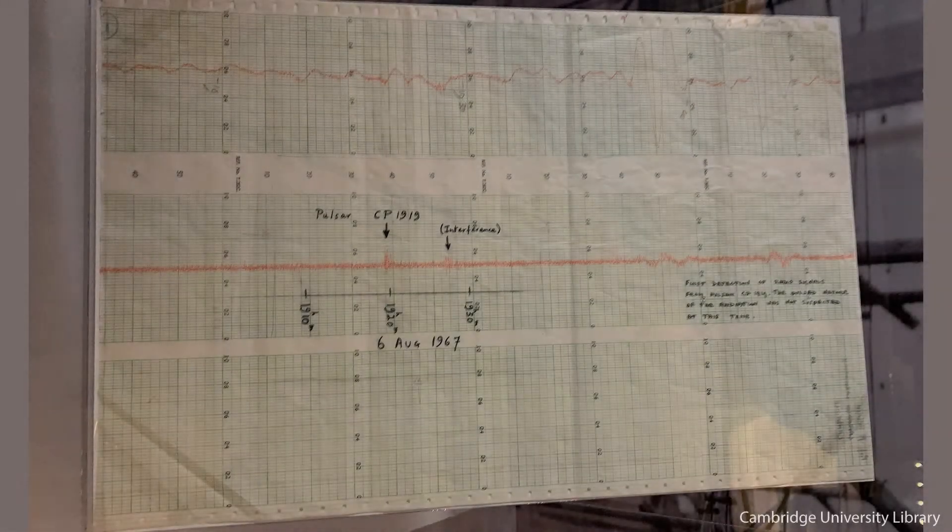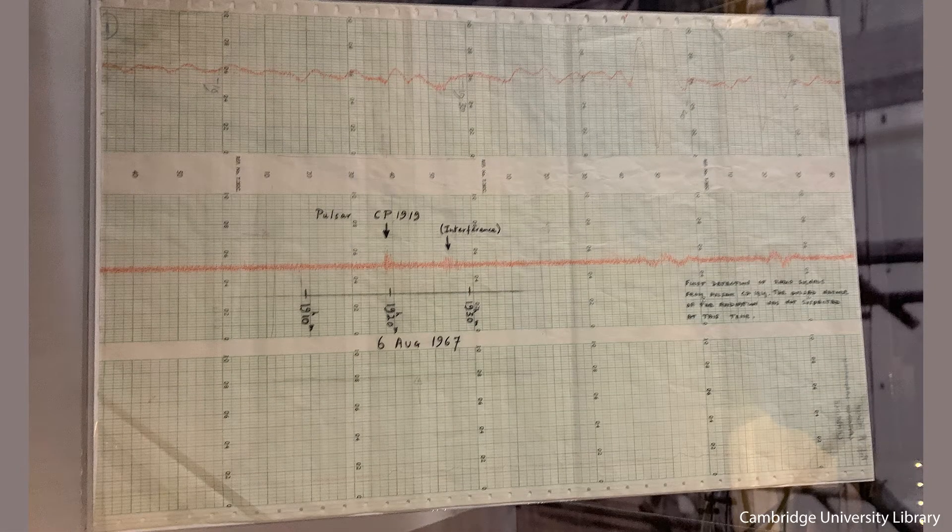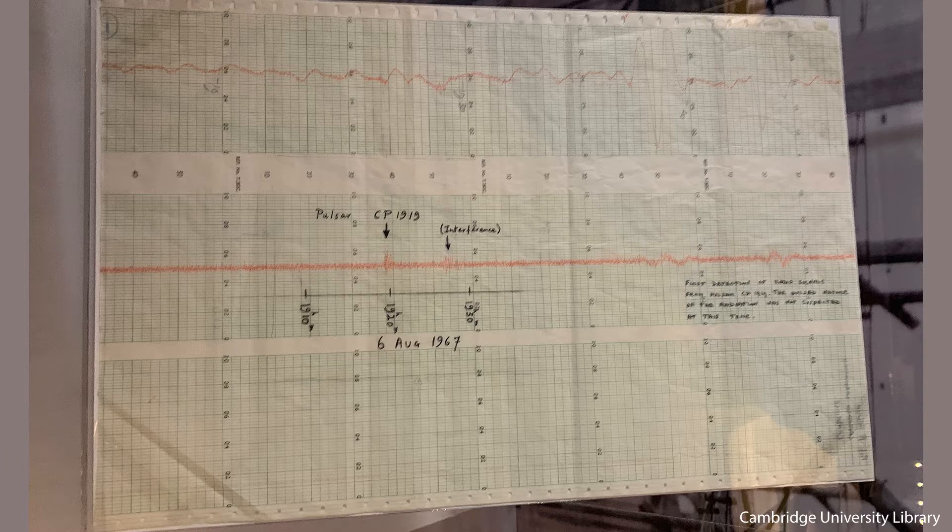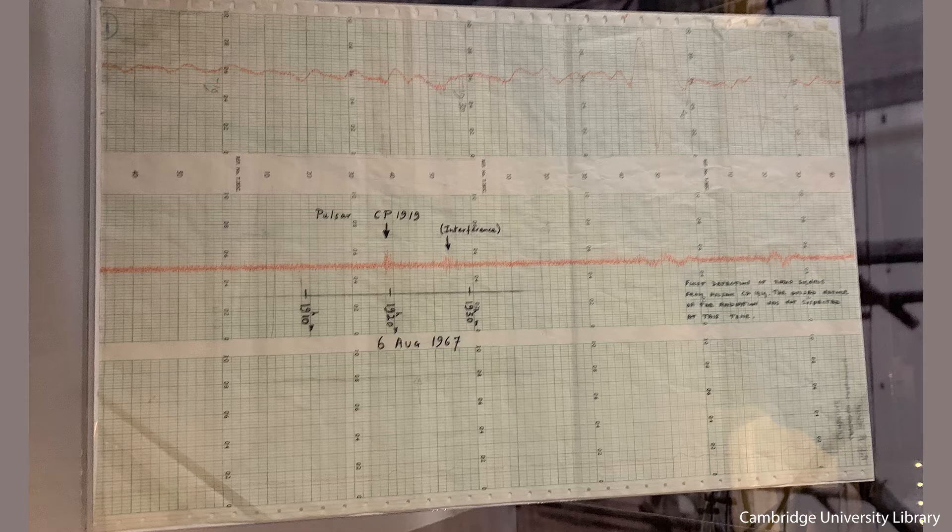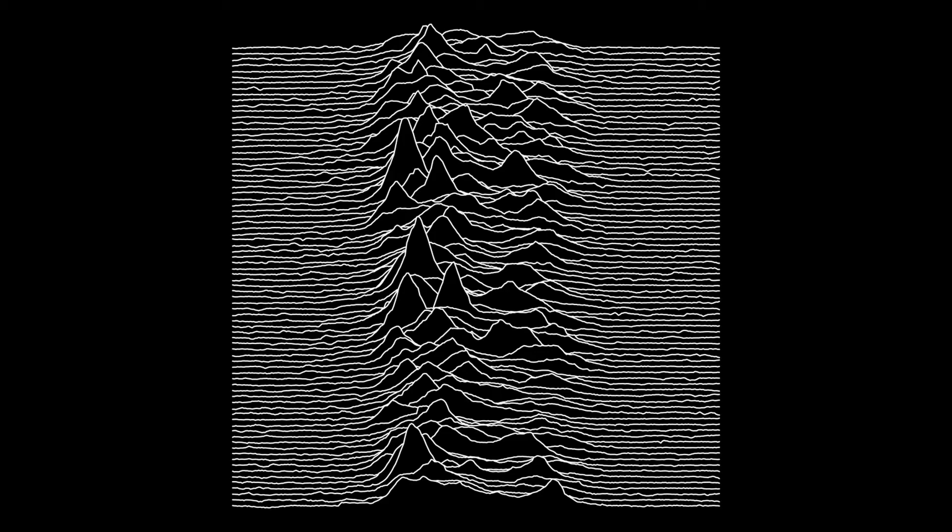The first discovered pulsar was observed on November 28th 1967 and because of its pulsating nature with a period of 1.33 seconds, it was believed that no astrophysical or man-made object could be the source and so it was named LGM-1, or little green man.